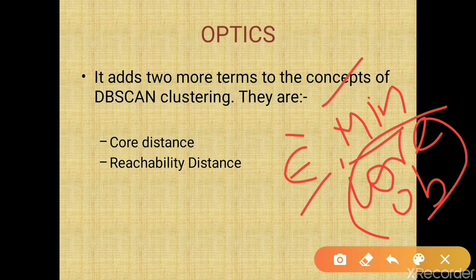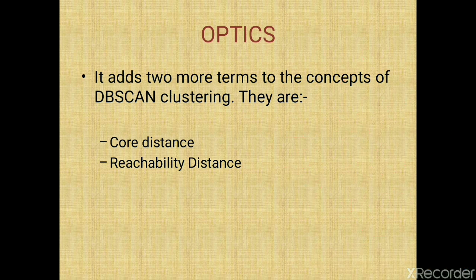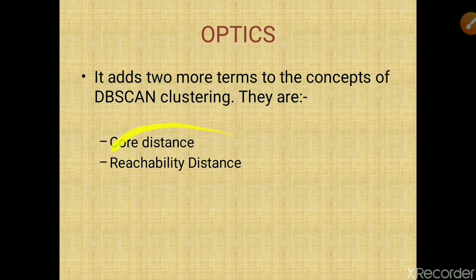In the case of OPTICS, we are using two more important terms along with epsilon and minimum points. One is core distance and another is reachability distance. These are the important concepts that come under OPTICS.